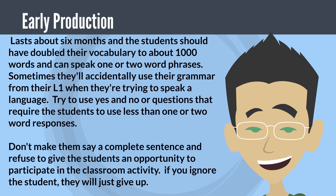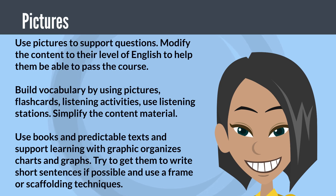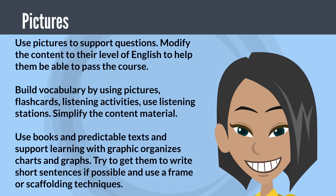Early production lasts about six months and students should have doubled their vocabulary to about 1,000 words and can speak one or two word phrases. Sometimes they'll accidentally use grammar from their L1. Try to use yes/no questions or questions that require fewer than one or two word responses. Don't require complete sentences or refuse students opportunities to participate. If you ignore the student, they will give up. Use pictures to support questions. Modify content to their level of English. Build vocabulary using pictures, flashcards, and listening stations. Simplify content, use predictable texts and graphic organizers, charts, and graphs. Try to get them to write short sentences using frames or scaffolding techniques.